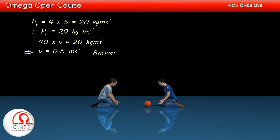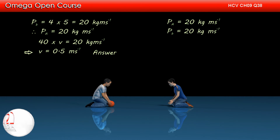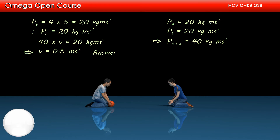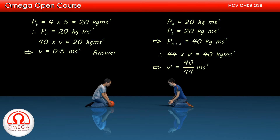This is the answer to part A of the question. When the ball is moving towards A for the first time, the momentum of A is 20 kg meter per second towards left and the momentum of the ball is 20 kg meter per second. So when A catches the ball, the momentum of the A plus ball system is 40 kg meter per second towards left. The mass of the system is 44 kg. If the speed of the system be V dash, then 44 into V dash must equal 40 kg meter per second. This implies V dash equals 40 by 44, or 10 by 11 meter per second.